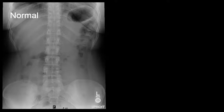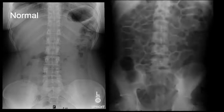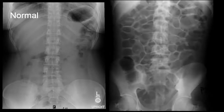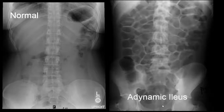Here we have another example of a normal radiograph, and in contrast, this patient has diffuse, balanced dilatation of the small bowel. This is an example of ileus, which can be seen after surgery or in patients who are on opioids.